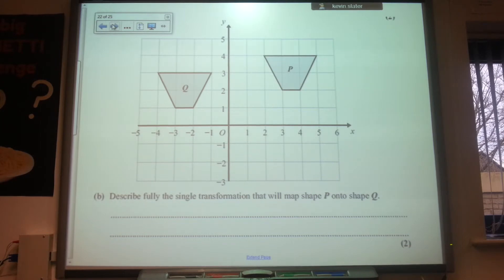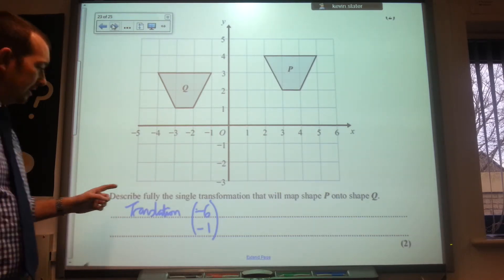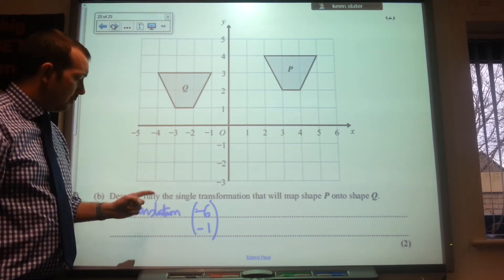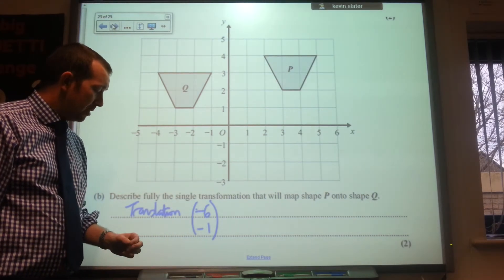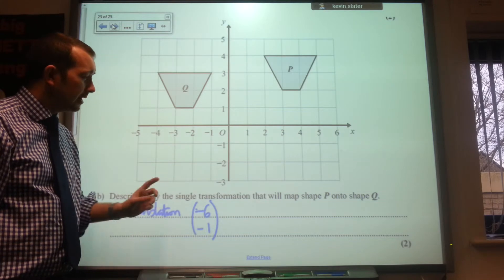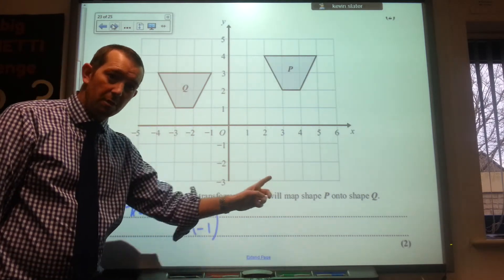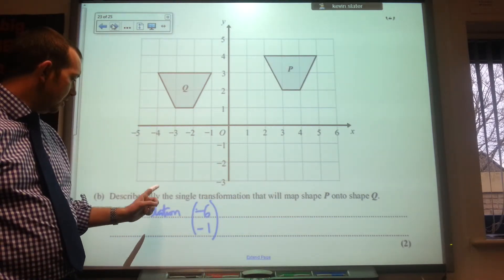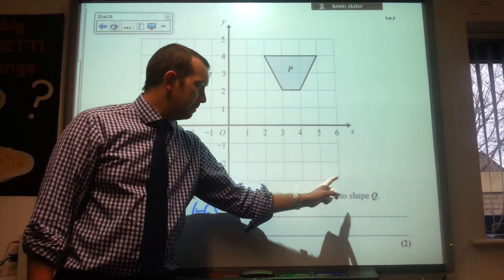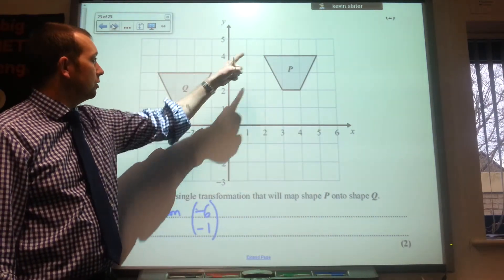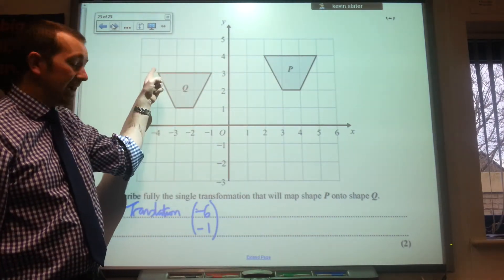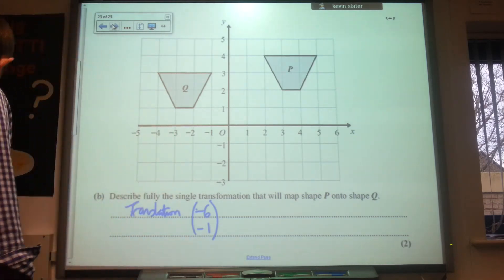Describe fully the single transformation that will map shape P onto shape Q. And that is a translation, and the translation vector there is minus six minus one. Now be careful, because many people are getting them all around on this question. The map shape P onto Q, so P onto Q. We've come back six and down one, so minus six minus one.